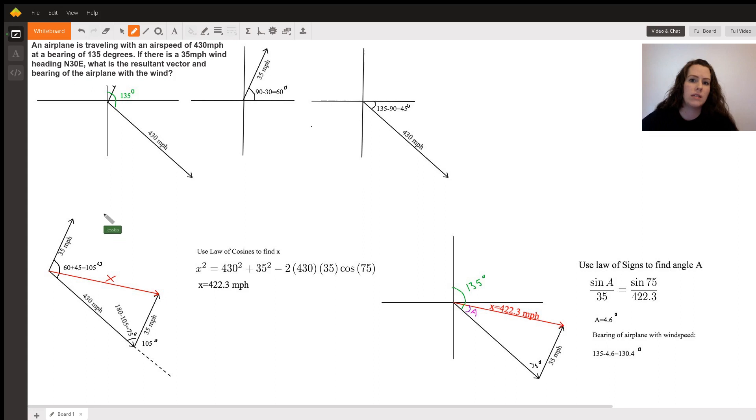Since we know that the angle from the wind vector to the 90 degree angle, and the airplane vector from the 90 degree angle, when we add those together, the 60 plus the 45, we get that the angle between the two is 105 degrees.